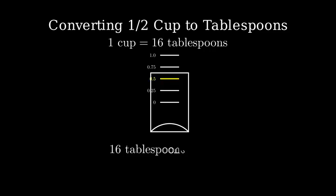To find how many tablespoons are in one half cup, we need to multiply 16 tablespoons by one half. Let's write this out: sixteen times one half.